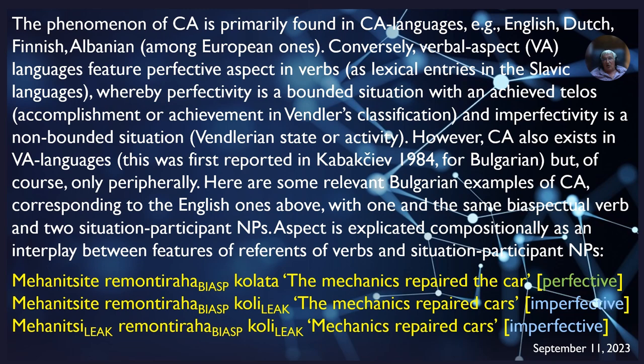The phenomenon of compositional aspect is primarily found in compositional aspect languages, for example English, Dutch, Finnish, and Albanian among European ones. Conversely, verbal aspect languages feature perfective aspect in verbs as lexical entries — in the Slavic languages, perfectivity is a bounded situation with an achieved telos (accomplishment or achievement in Vendler's classification), and imperfectivity is a non-bounded situation (Vendlerian state or activity). However, compositional aspect also exists in verbal aspect languages, first reported for Bulgarian in a publication of mine in 1984, but only peripherally.